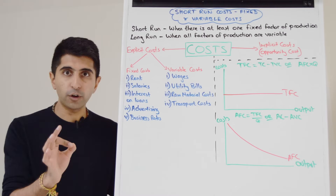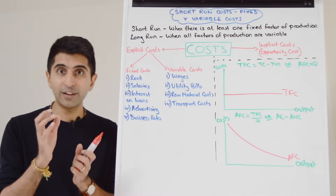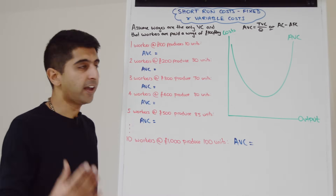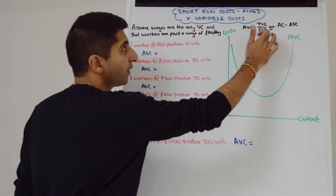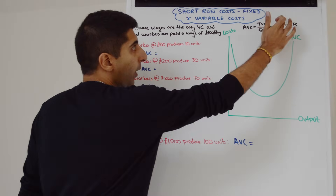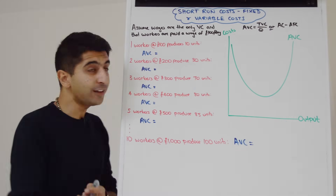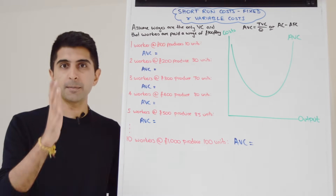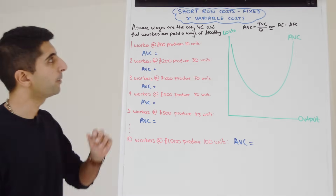The average variable cost curve is shaped due to the law of diminishing returns. The average variable cost curve looks like a nice smiley face. To calculate it, we could do total variable cost divided by quantity, or average cost minus average fixed cost. Why does it look like this smiley face? It's due to the law of diminishing marginal returns. Let's understand how by using a simple numerical example.